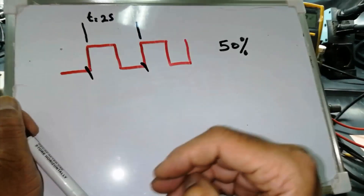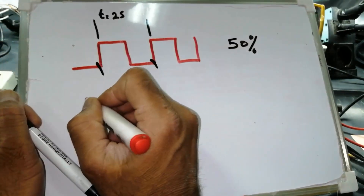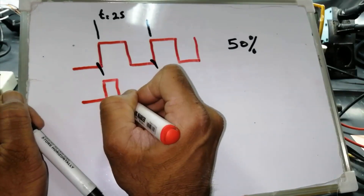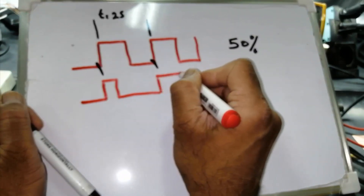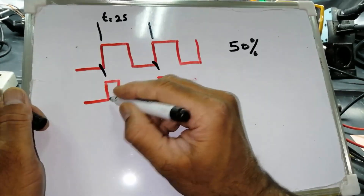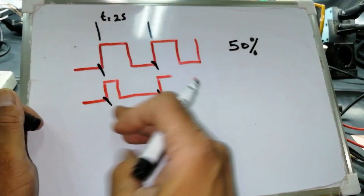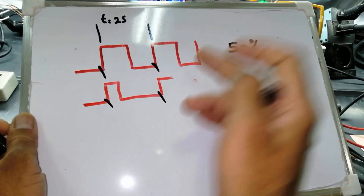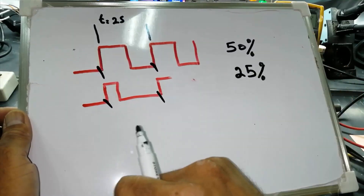If we have another circuit — I will draw it here — the time period is the same but it remains on for only half a second and off for one and a half seconds. Total time from end to end is two seconds, but it is working for only half a second and off for one and a half seconds. So its duty cycle is 25%.